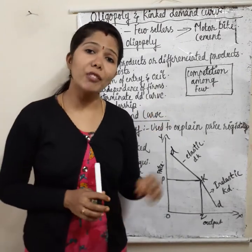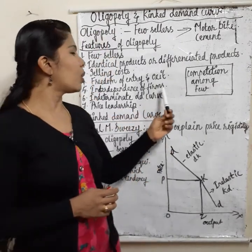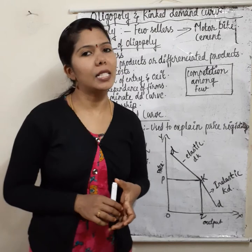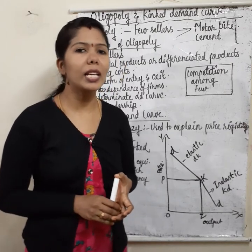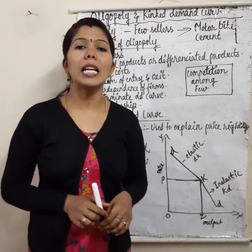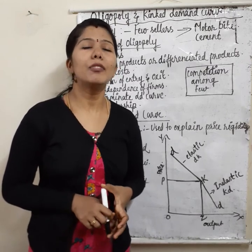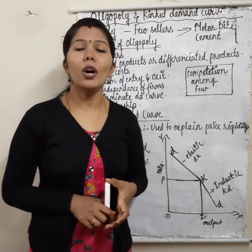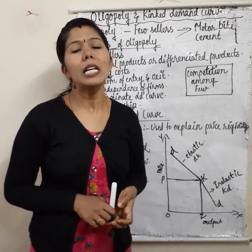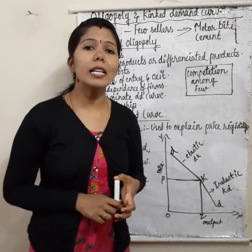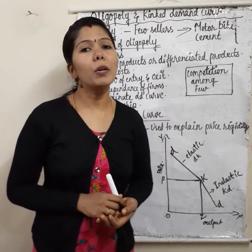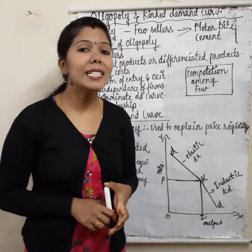Fourth feature: freedom of entry and exit. Fifth: interdependence of firms — the firms under oligopoly are interdependent and interrelated. Sixth: indeterminate demand curve — the demand curve under oligopoly is indeterminate. The reason is that firms under oligopoly don't have any idea about the rivals' actions and reactions, so the demand curve is indeterminate.